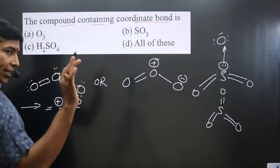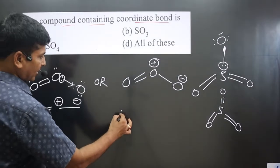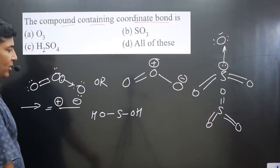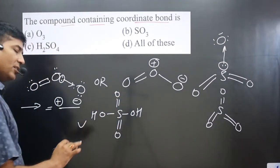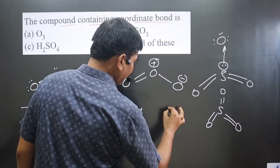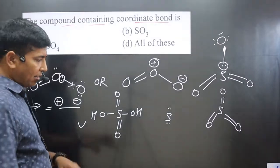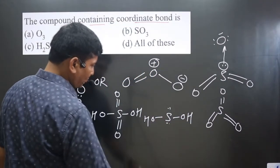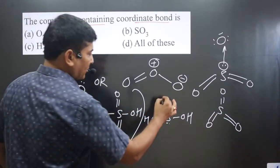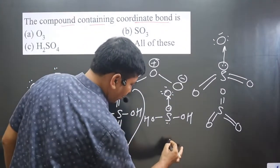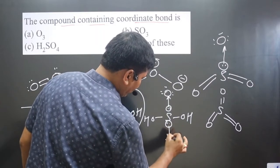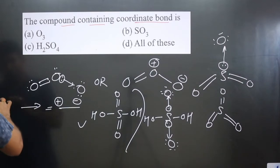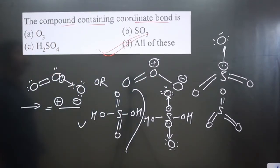Similarly, for H₂SO₄, sulfur is the central element. We make two OH pairs and attach them to sulfur. Two oxygen atoms are left, which are attached to sulfur. Sulfur has six valence electrons — two form covalent bonds with OH groups, and the remaining two oxygen atoms each donate electron density, forming coordinate bonds. So in each compound — O₃, SO₃, and H₂SO₄ — a coordinate bond is present. Option D is correct.